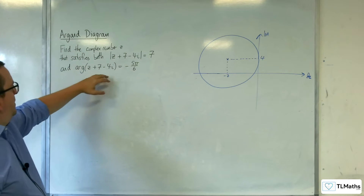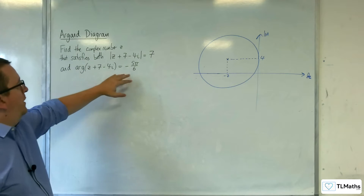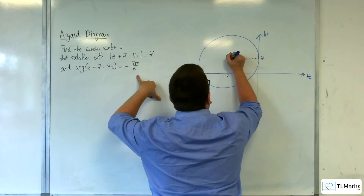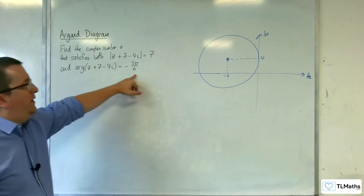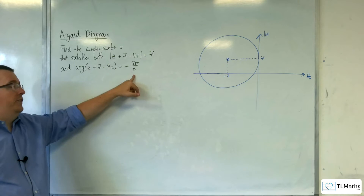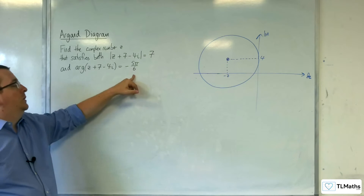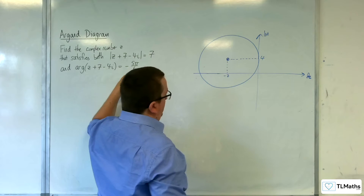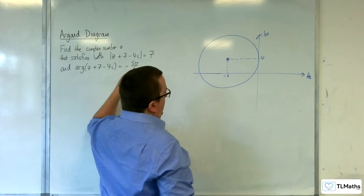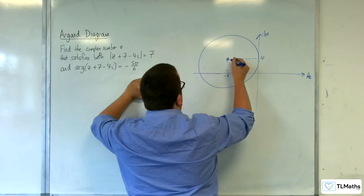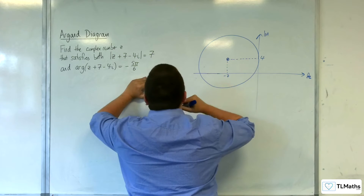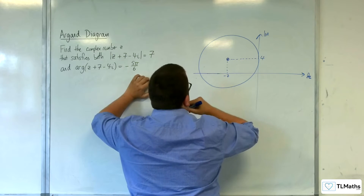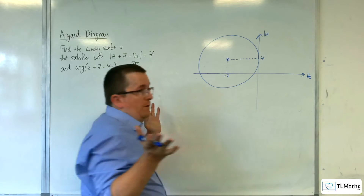The argument of z plus 7 take away 4i is equal to minus 5π over 6, so that's a half-line starting at the centre of our circle at an angle of minus 5π over 6. I don't know yet whether this is going to intersect the circle above the real axis or below it.